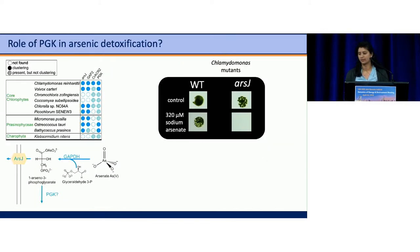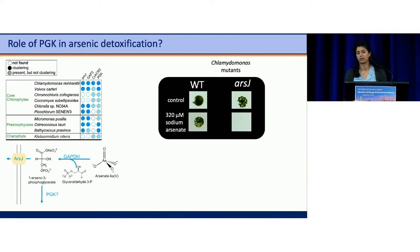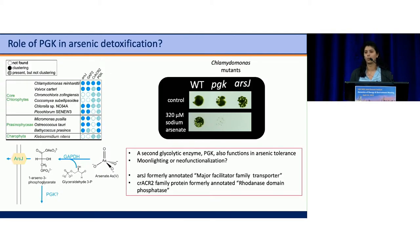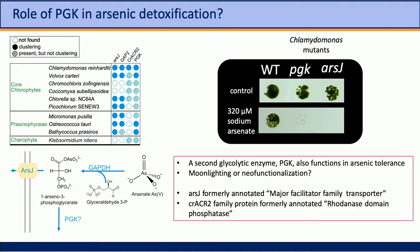This raises the question: what is the role of PGK in arsenic tolerance? To test this, we ordered the Chlamydomonas mutants available for our genes of interest and tested them under sodium arsenate stress. We can see that arsJ, the transporter protein, shows a growth defect under arsenate stress. The PGK mutant also shows a similar phenotype, verifying the role of PGK in arsenic tolerance. The question remains whether PGK is moonlighting as an enzyme in both glycolysis and arsenic detoxification, or whether this is an example of neo-functionalization, since those four species with PGK in the gene neighborhood also contain two copies of this gene.